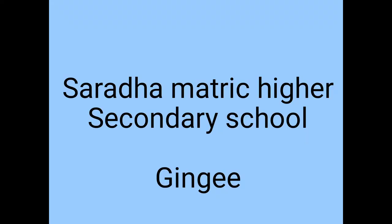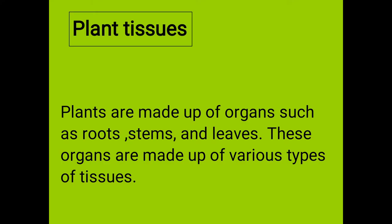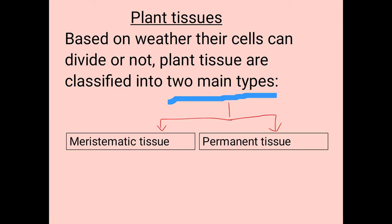Dear students, today we will discuss plant tissues. Plants are made up of organs such as roots, stem, and leaves. These organs are made up of various types of tissues. Plant tissues are classified based on whether their cells can divide or not.